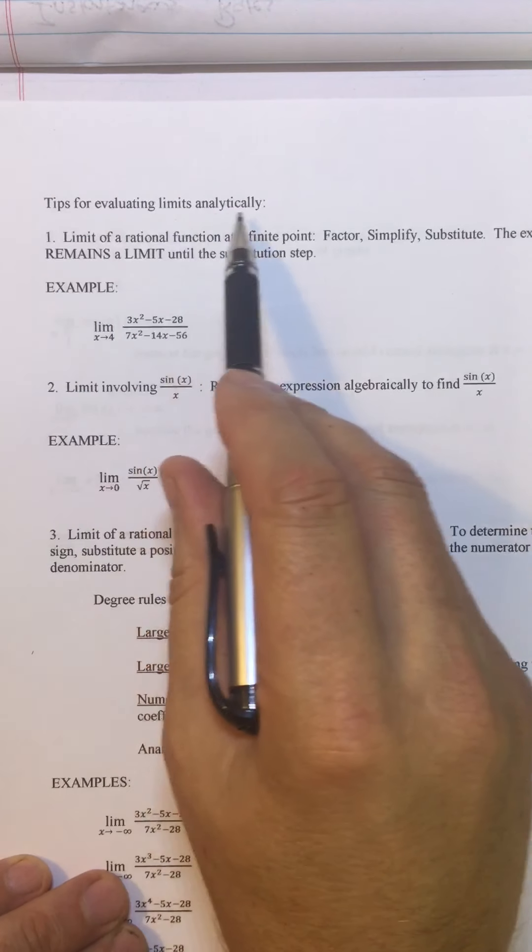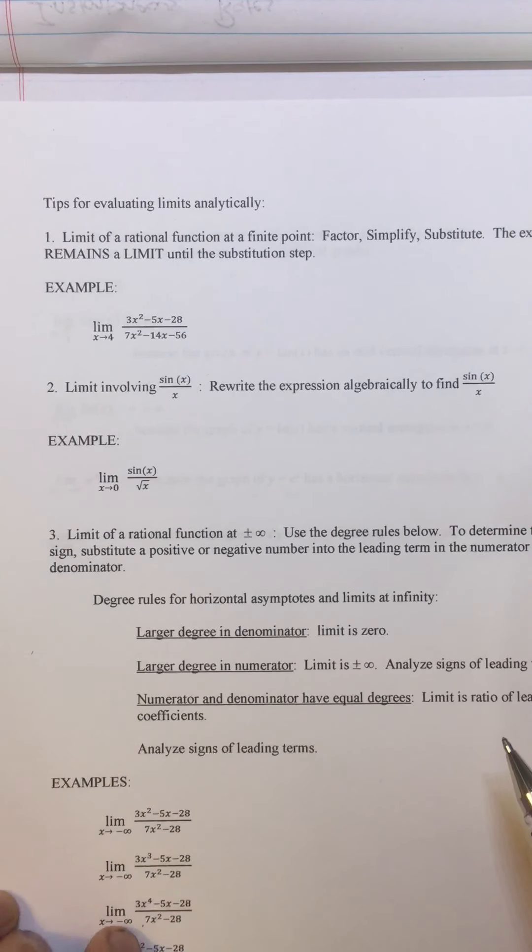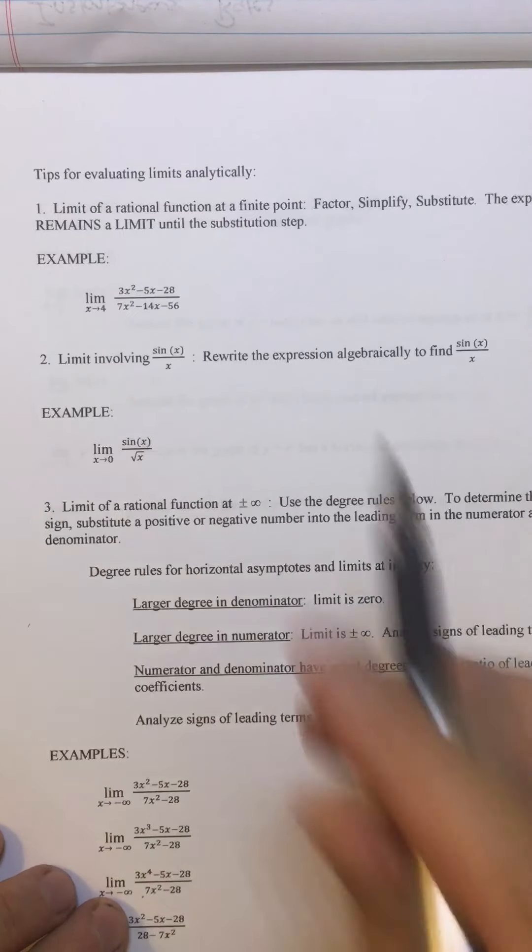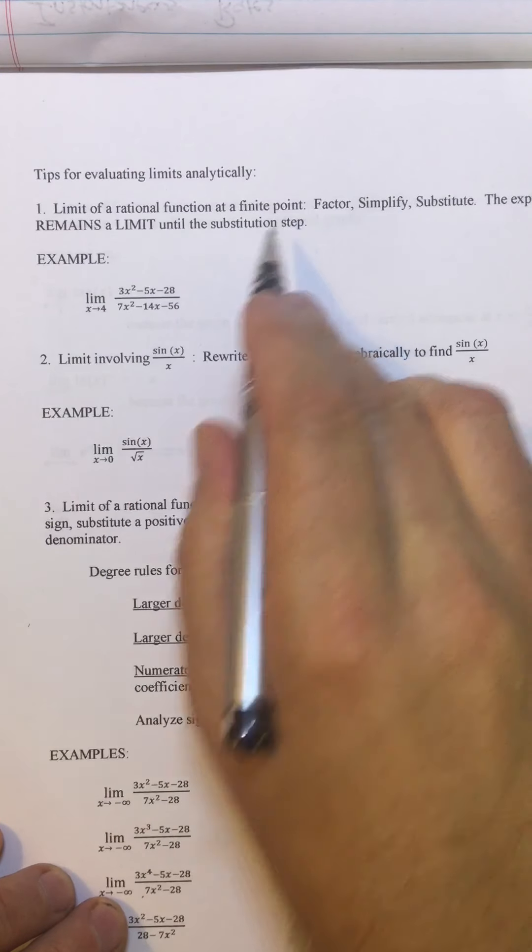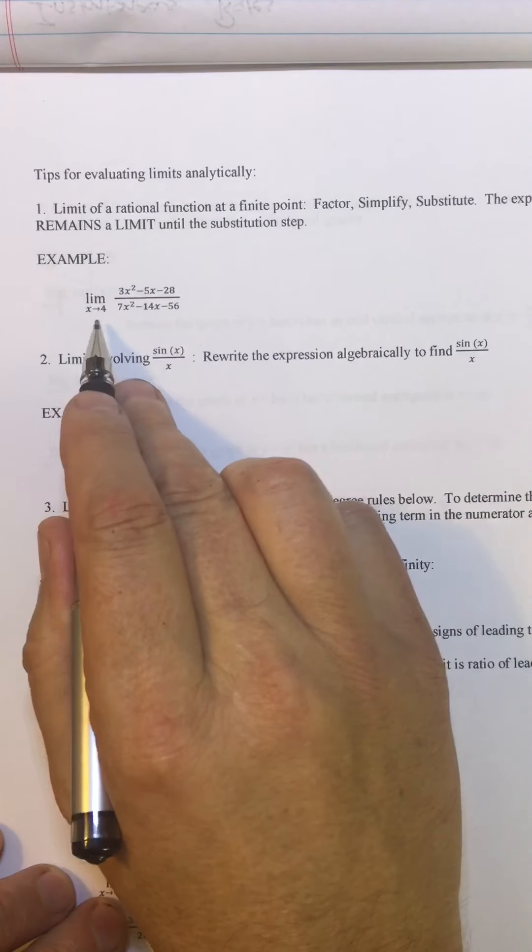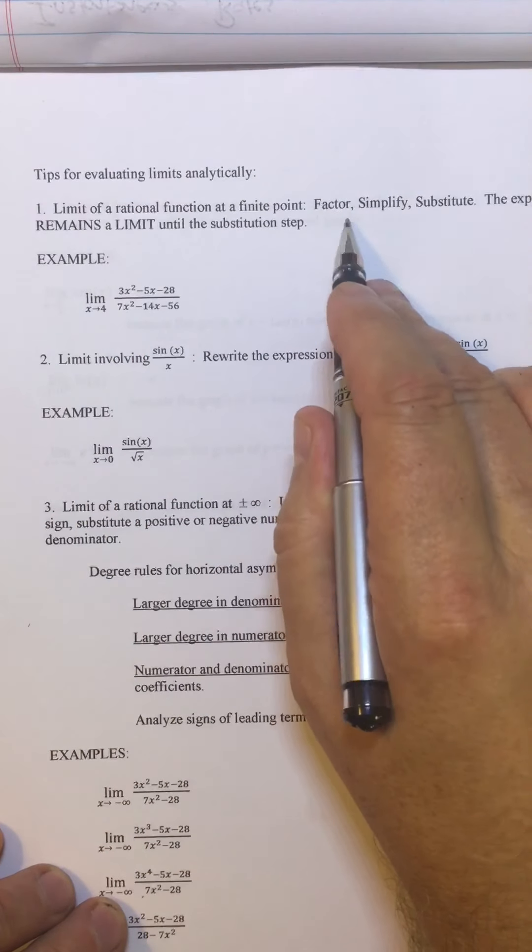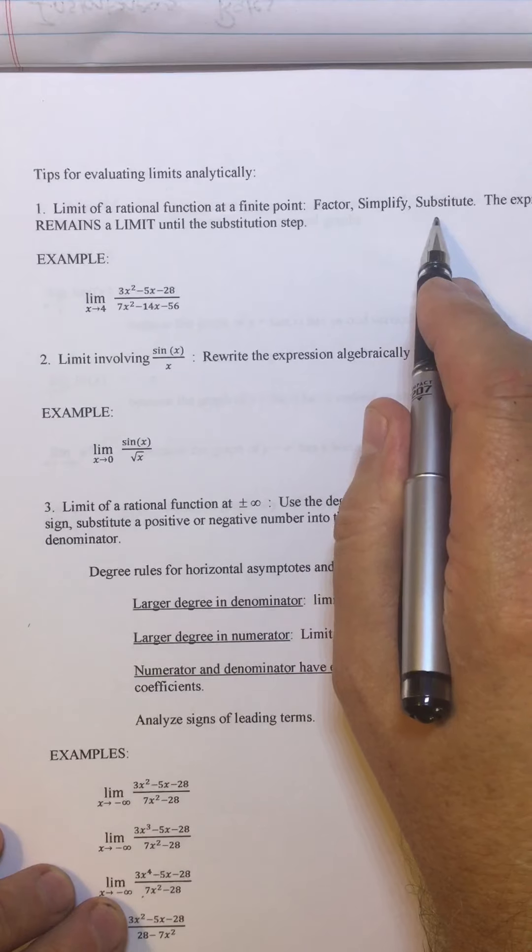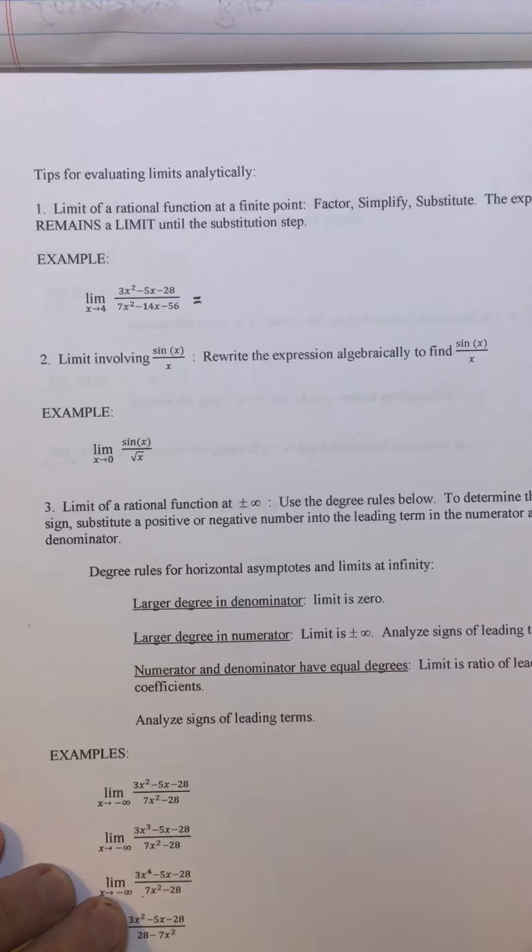But I also want to do, I have this sheet that I have posted on the Google Classroom and also in the handouts section of the website. It says tips for evaluating limits analytically. So, graphically, you can look at the graph. We're pretty good at that. But analytically, there's different things you can do. So I wanted to sort of break down the types of limits you can do analytically and how you do them and give an example of each. So, the limit of a rational function at a finite point. Example like this. Not limit as x approaches infinity. Limit as x approaches four. What are the steps? Factor, simplify, substitute. The expression remains a limit until the substitution step.